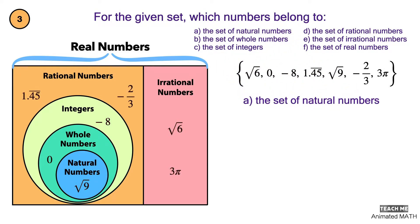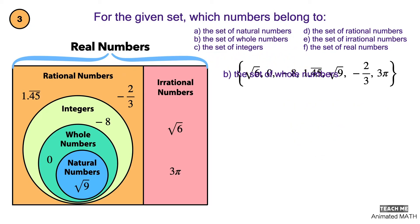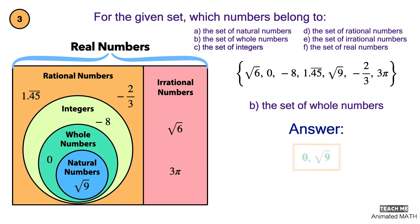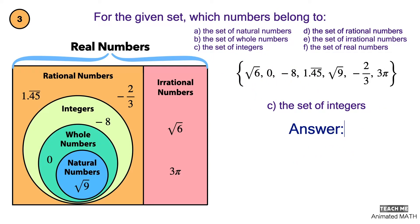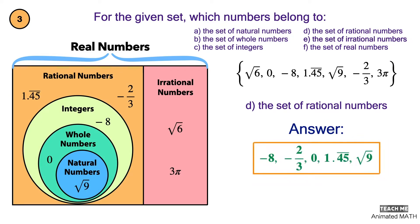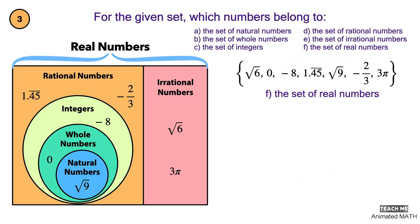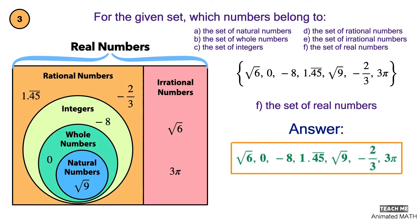The set of natural numbers contains square root of 9. The set of whole numbers contains 0 and square root of 9. The set of integers contains negative 8, 0, and square root of 9. The set of rational numbers contains negative 8, negative 2 thirds, 0, 1.45 repeating, and square root of 9. The set of irrational numbers contains square root of 6 and 3 pi. The set of real numbers contains all of the given numbers.